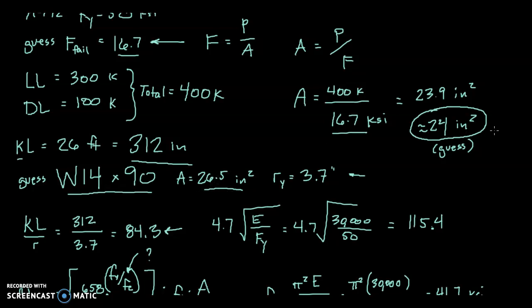This is just a guess. We don't know that the failure stress is 16.7, so this area requirement of 24 is still a guess. If the column we chose is too strong, we can choose one with an area less than this. It's okay—this is not a limit we cannot go below.